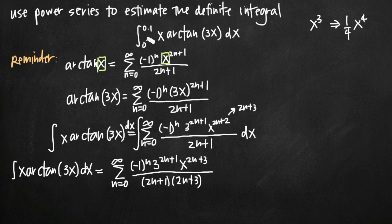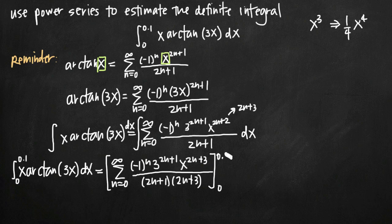To turn it into a definite integral, we add our limits of integration 0 and 0.1 to the left-hand side, and on the right-hand side we evaluate on the interval 0 to 0.1. The easiest way to evaluate the right-hand side is to plug in the first several terms for n — n equals 0, 1, 2, 3, etc. — to get the first several terms of the series, then evaluate on the interval 0 to 0.1.